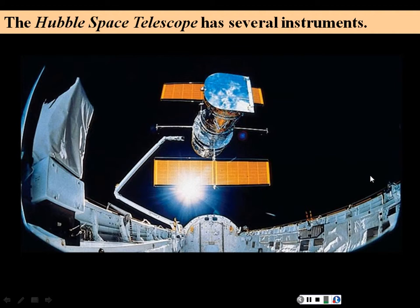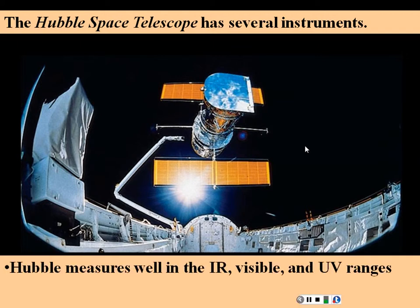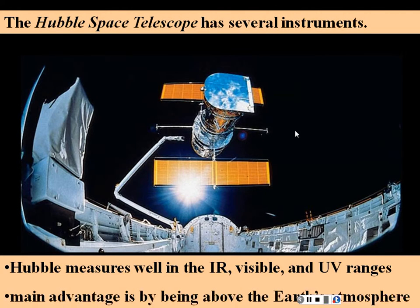One advantage of the Hubble is that it is beyond our atmosphere, so it can collect light without atmospheric effects. The Hubble is not the largest telescope, but because of that advantage it produces better images than ground-based telescopes. It can measure in infrared, visible, and ultraviolet ranges and has instruments for all of those.